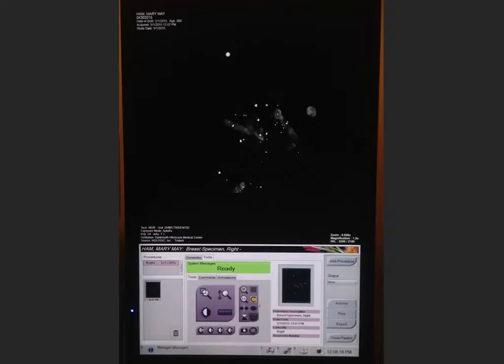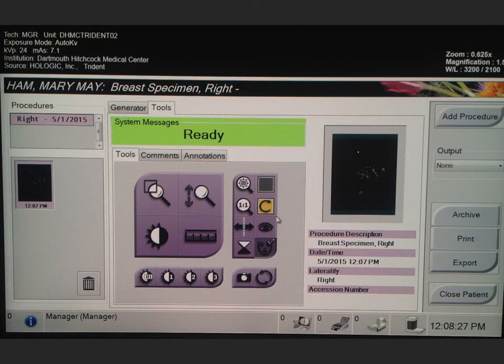Here's the specimen image that comes up. Here's what we see on the trident after the image has been taken and you can see here there's a variety of different options to be able to zoom, magnify or change the gray scale. You can also do some basic annotations and then once you're happy with the image, just select close patient and the image will print.